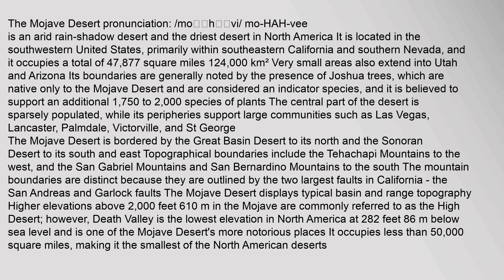The mountain boundaries are outlined by the San Andreas and Garlic Faults. The Mojave Desert displays typical basin and range topography. Higher elevations above 2,000 feet (610 meters) in the Mojave are commonly referred to as the high desert. However, Death Valley is the lowest elevation in North America at 282 feet (86 meters) below sea level and is one of the Mojave Desert's more notorious places. It occupies less than 50,000 square miles, making it the smallest of the North American deserts.